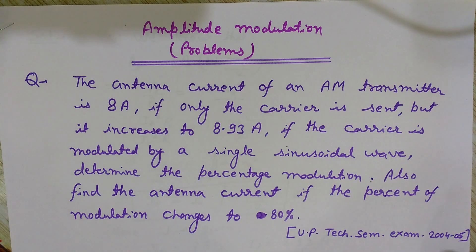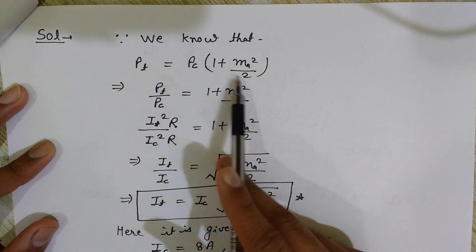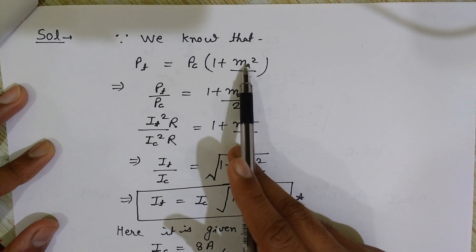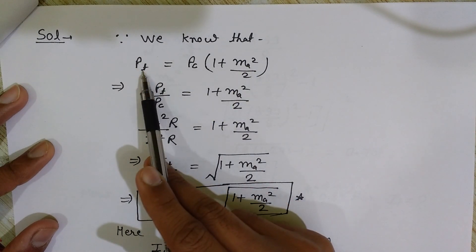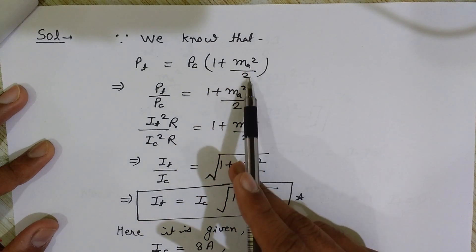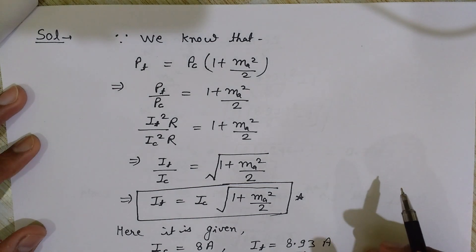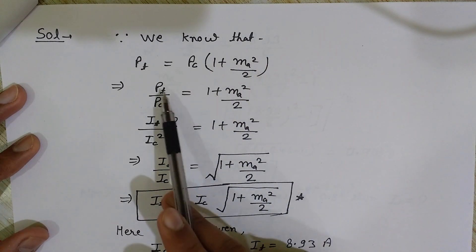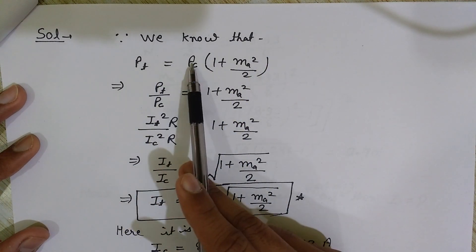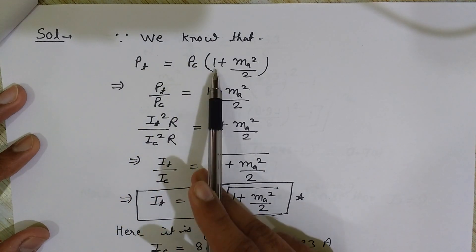The standard formula for total power in amplitude modulation is: P_total equals P_carrier times (1 + ma² / 2), where ma is the modulation index for amplitude modulation. This formula is for power, but since we are dealing with antenna current, I need to convert it to a current-based formula. Taking the ratio, P_total divided by P_carrier equals (1 + ma² / 2).